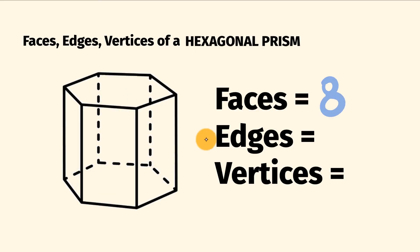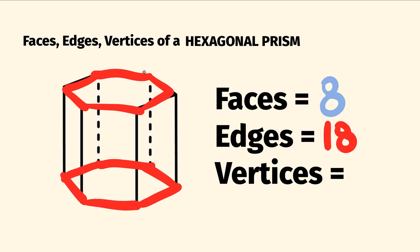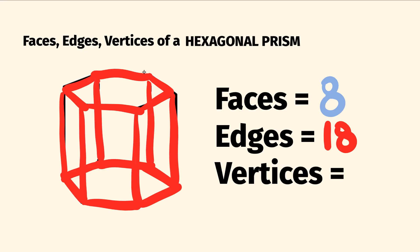So now to the number of edges — these are where the shape's faces meet. A hexagonal prism has 18 edges. So along the top here we have one, two, three, four, five, six edges. And along the bottom we have another six edges. And joining these two hexagons together, we have another six edges there. So six plus six plus six means that we have 18 edges altogether.